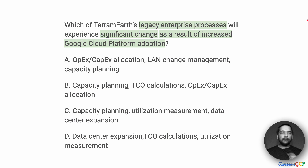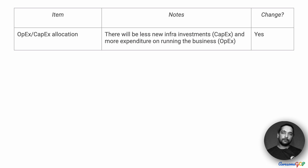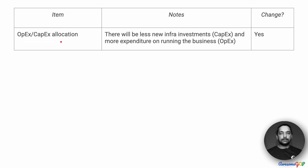The way we'll approach this is to list out each of the items and then figure out if there's been or if there's expected to be a change from the legacy process. The first one is OPEX and CAPEX.